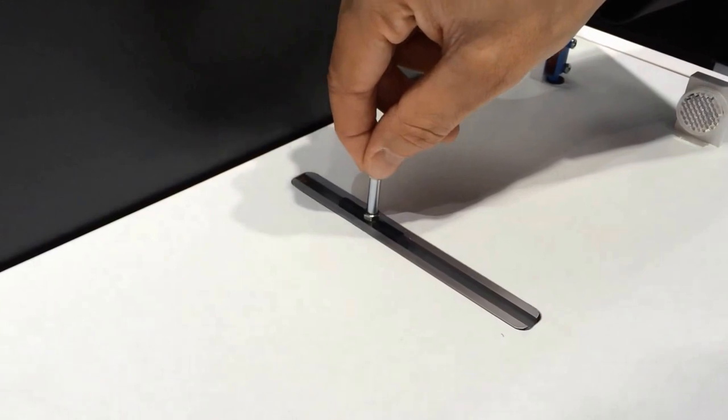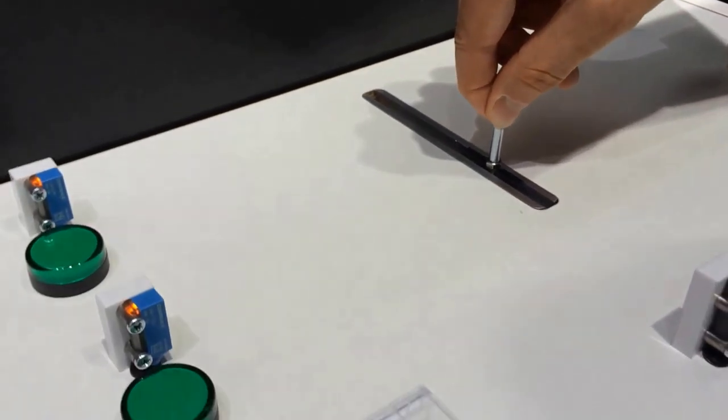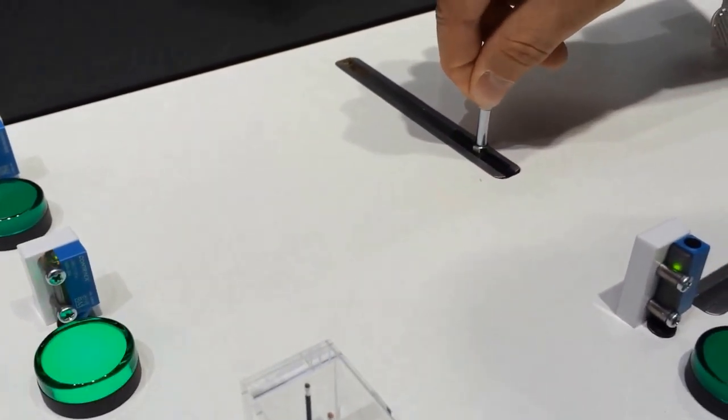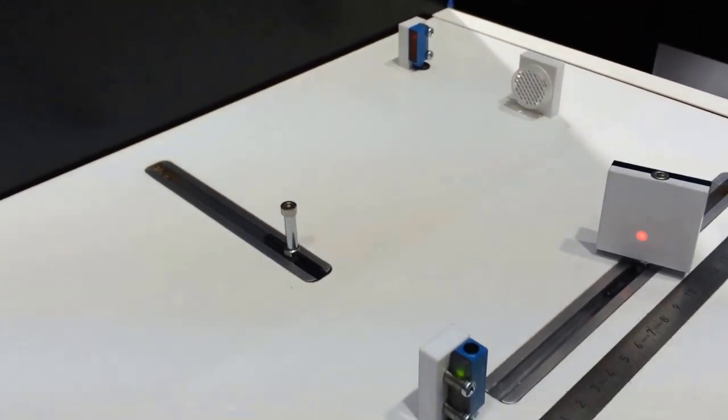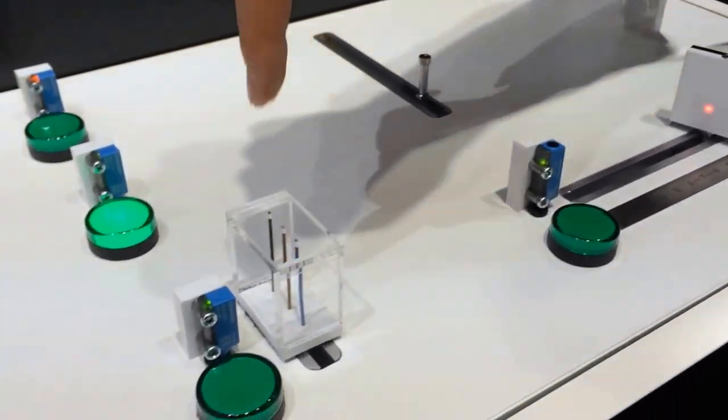Same thing for the reflex sensor. You can detect here this 4mm rod. So the light beam is so small, you can detect very small objects.